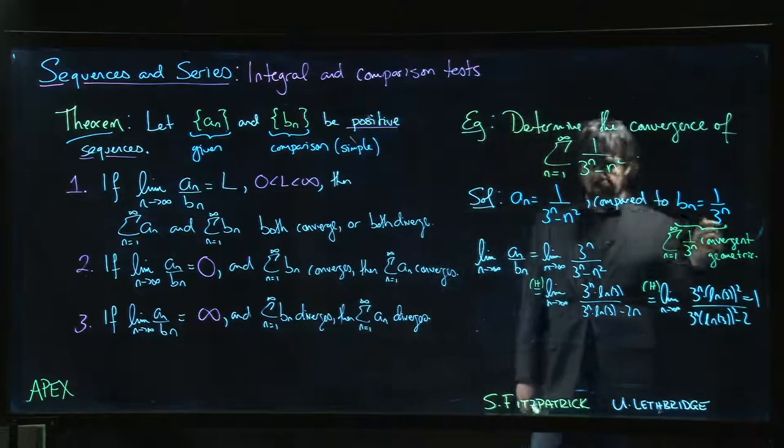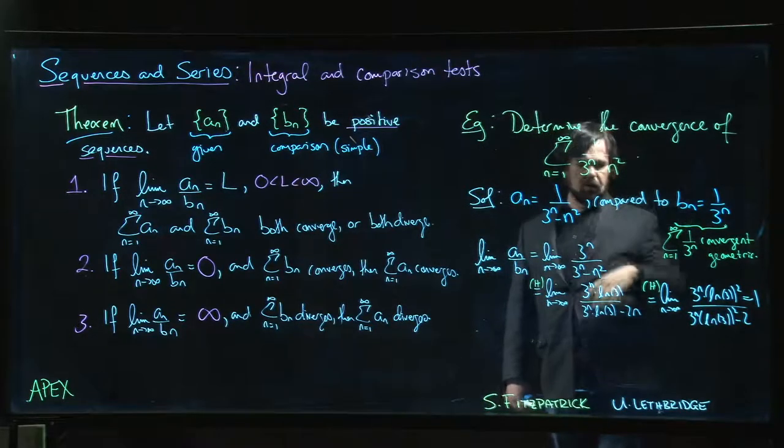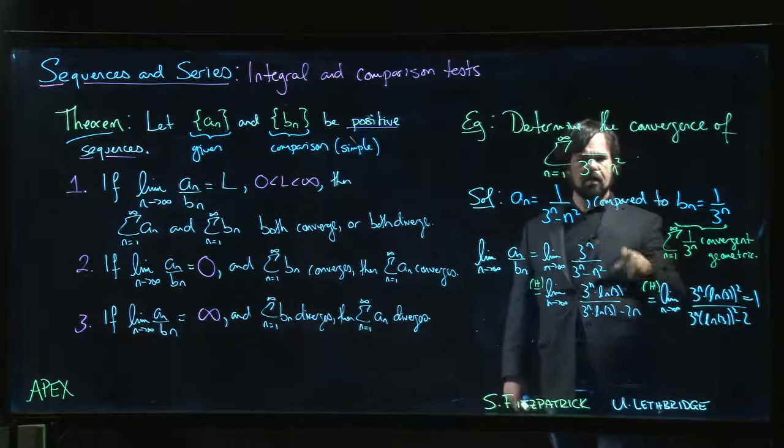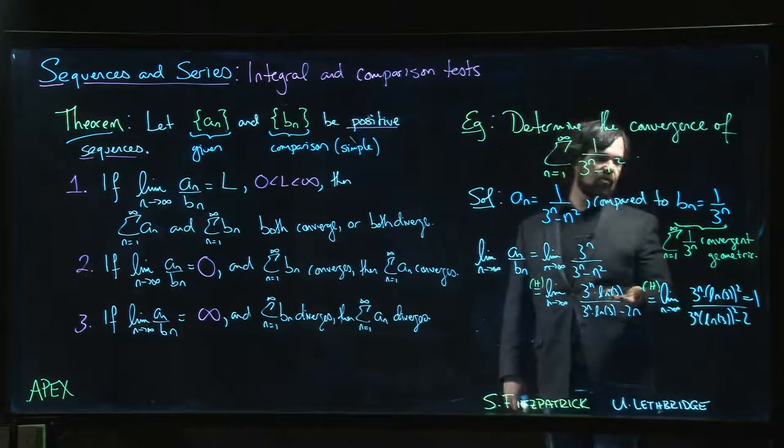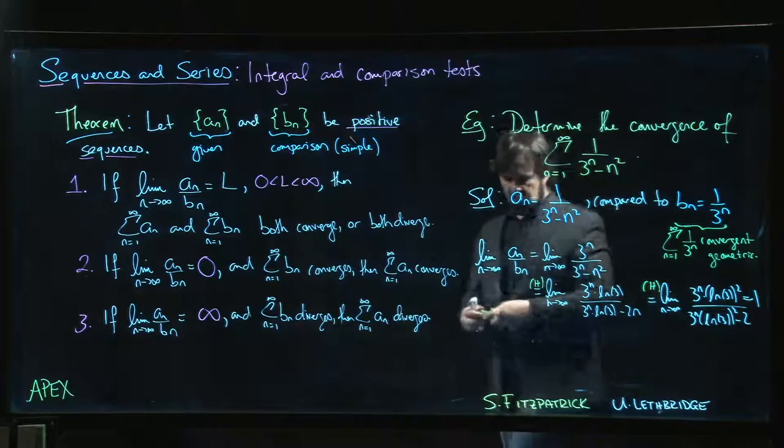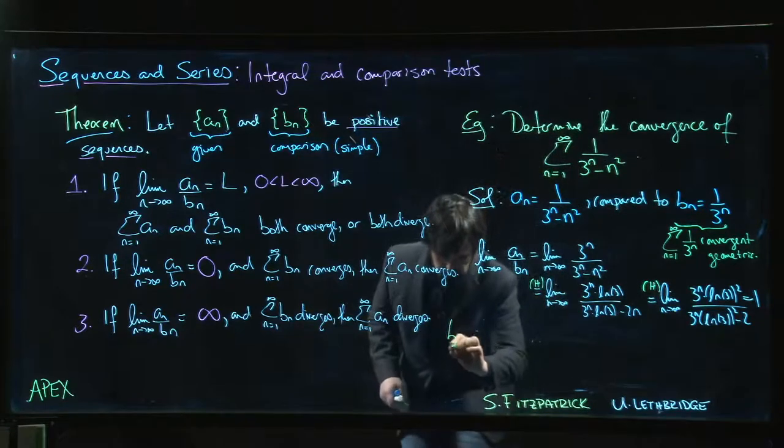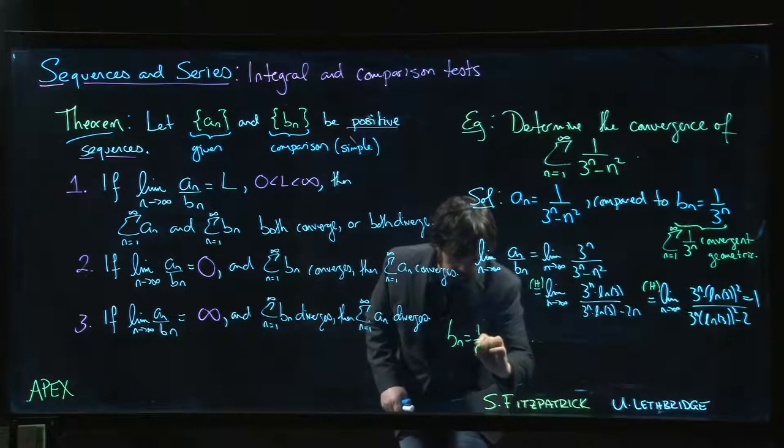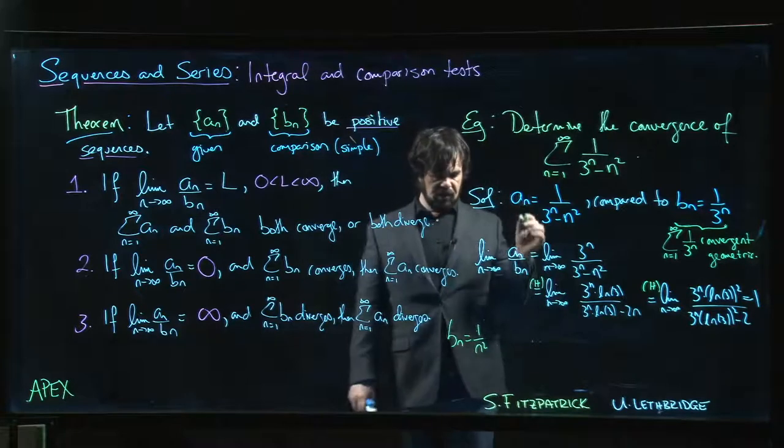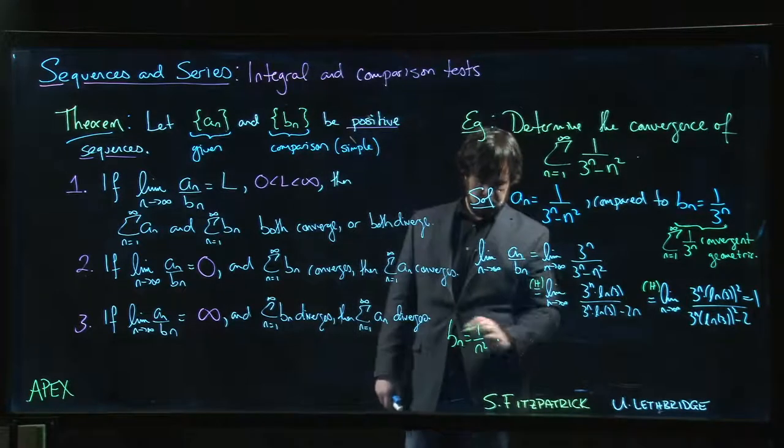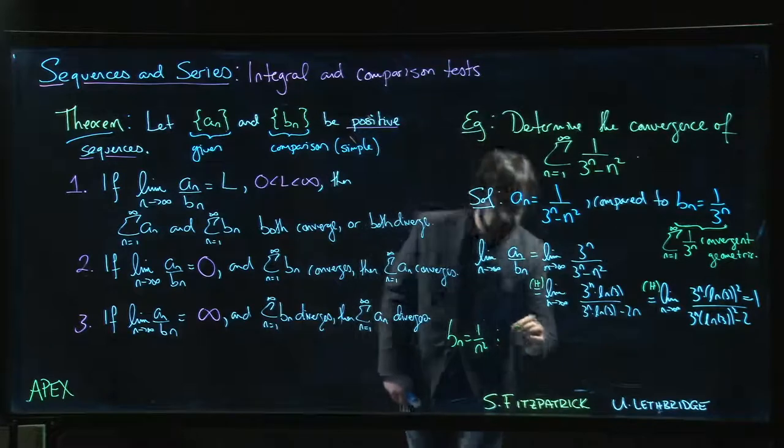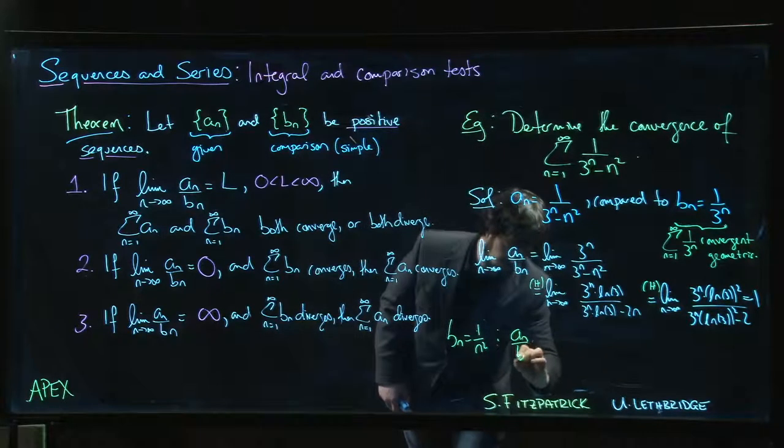Now you might have been wondering, what if you - I don't know, you messed up, it's not really messed up - but maybe you decided to compare with n squared instead? What if you did b_n equals 1 over n squared? You say, hey, that gives me a convergent p-series.